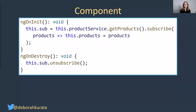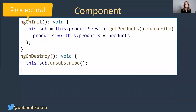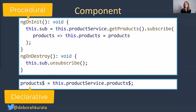So in our component, instead of ngOnInit and ngOnDestroy and all of the extra code for managing our subscription, we could just have this. We define another local variable, products$, and just assign it to our product service's products$. And you could add some exception handling there.